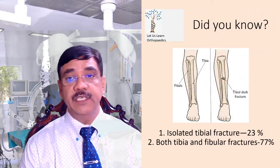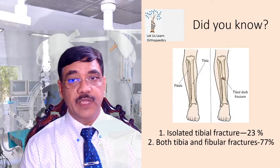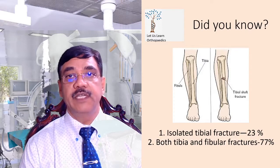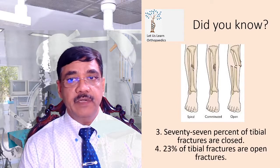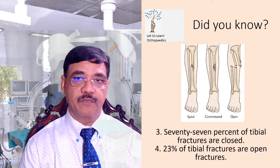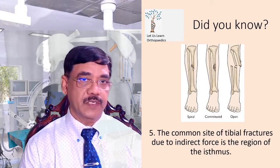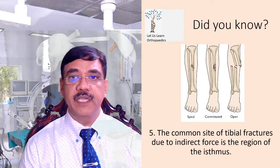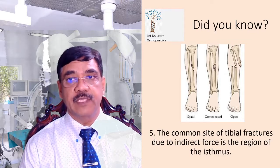Isolated tibial fractures account for only 23%, whereas both tibia and fibular fractures account for 77% of cases. 77% of the tibial fractures are closed fractures and 23% are open fractures. The common site for tibial fractures due to indirect force is the junction of the middle and lower thirds.